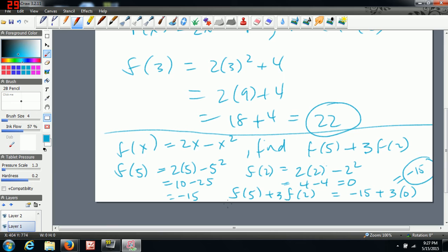You do the actual question they're asking you in the last step because you want to find f of 5 first, then f of 2. Then you can do f of 5 plus 3 times f of 2. So the answer to that one would be negative 15 as your final answer.